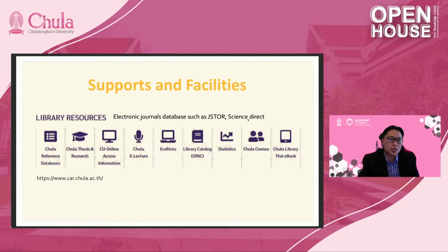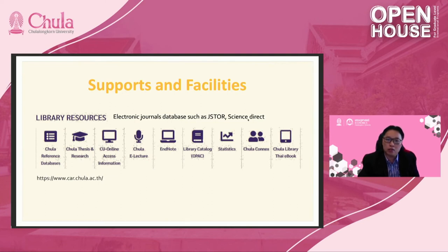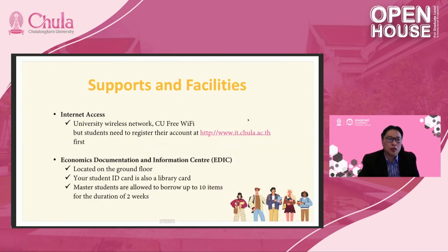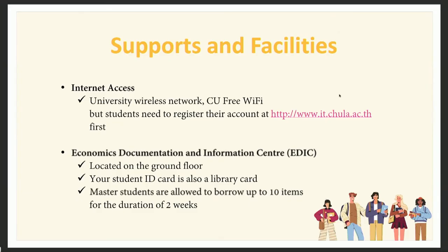We also have support and facilities: library resources — all of Chulalongkorn's facilities — to support students, including an electronic journals database. Students can use these to do research, look for information, find previous research papers to help with their thesis, non-thesis, or individual studies. We also have internet access and an Economic Documentation and Information Center.